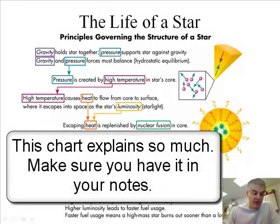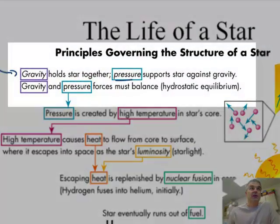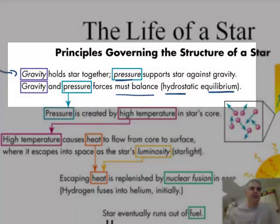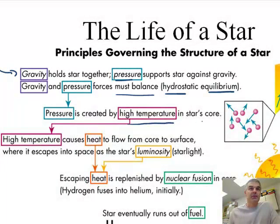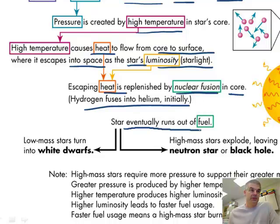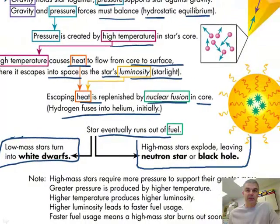To summarize: gravity holds the star together; pressure supports the star against gravity; gravity and pressure must balance — that's hydrostatic equilibrium. Pressure is created by the high temperature in the star's core, which causes heat to flow to the surface, escaping as the star's luminosity. Heat is replenished by nuclear fusion — hydrogen fuses into helium initially — but the star eventually runs out of fuel. Low mass stars turn into white dwarfs; high mass stars explode, leaving a neutron star or a black hole.